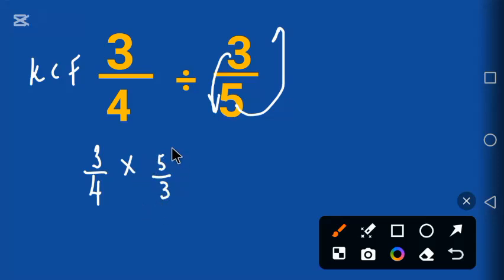This is also called reciprocal. Now let's simplify. 3 times 5 can be written as 3 times 5 all over 4 times 3.